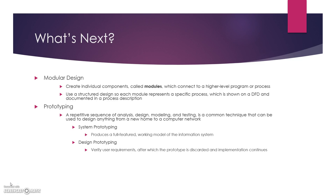What's next? Basically, after you have the forms designed or the interface design, you'll start with modular design — creating individual components or modules which will roll up into a bigger process. Use a structured design for each module, as shown on the DFD or documented in the process description. Another option is to prototype. You have system prototypes where you produce a full-featured working model of the IS — think of that as beta, then alpha, then general release. And then design prototypes, which can be drawings or whatever, basically a way to verify the user requirements to make sure what you're trying to develop and implement is effective.